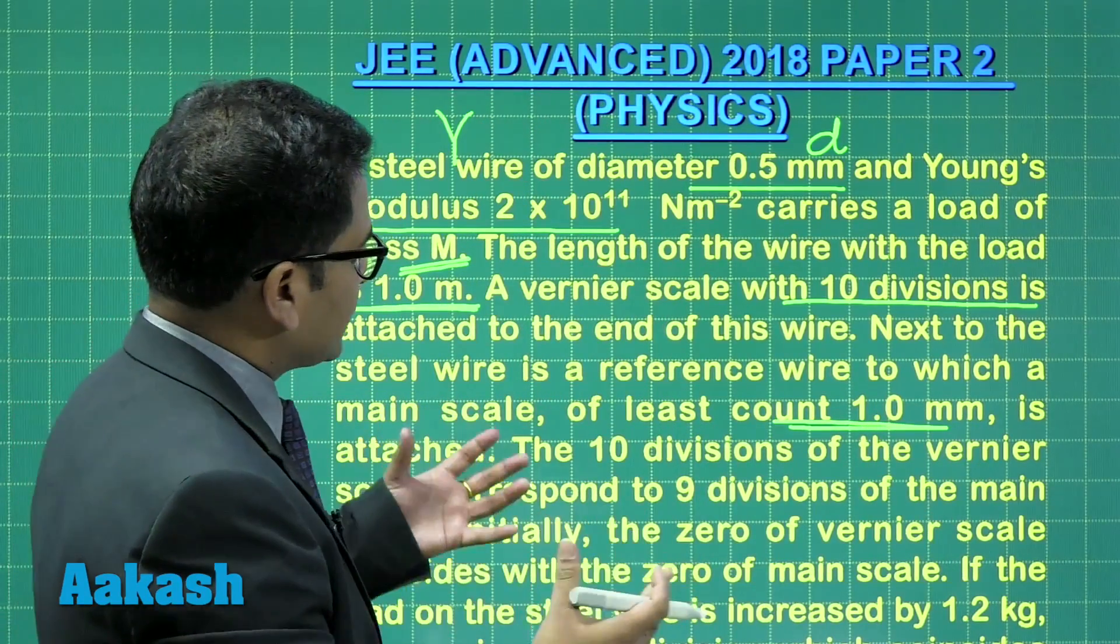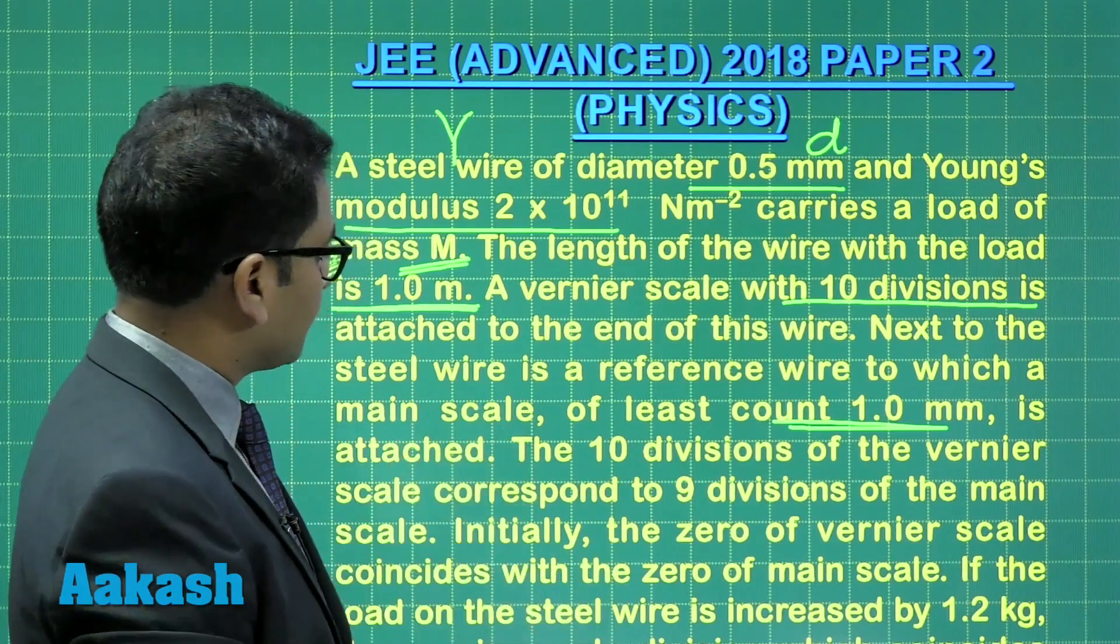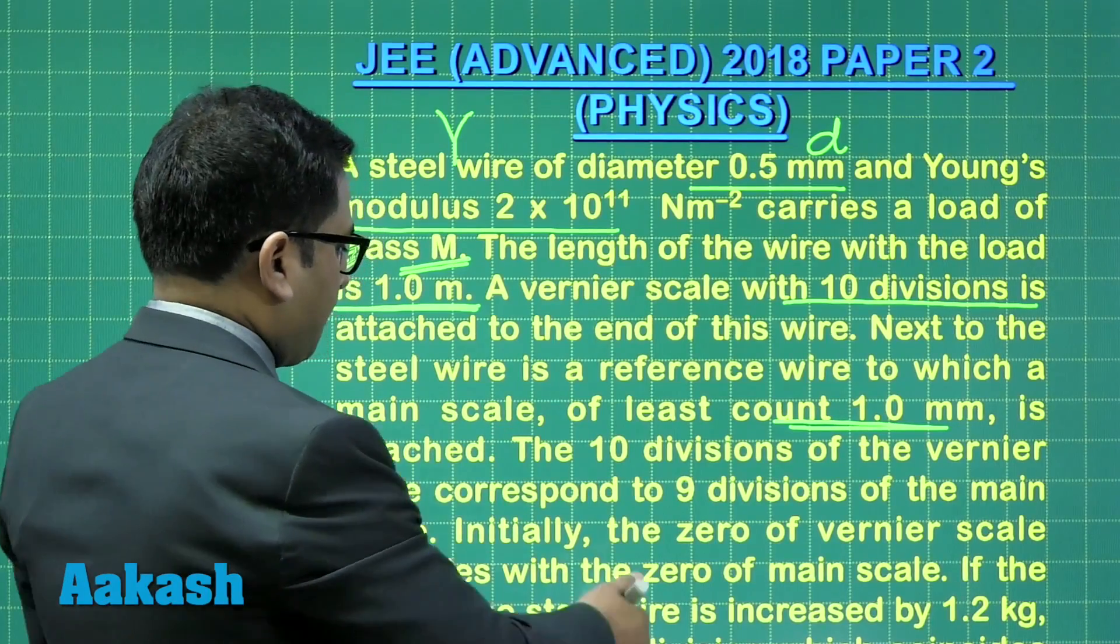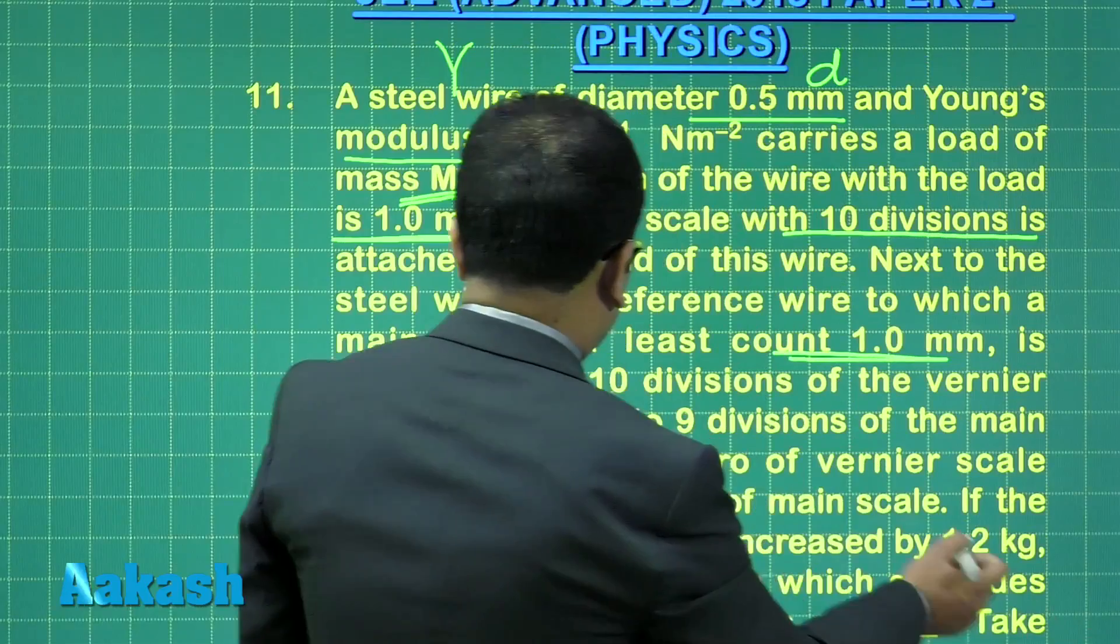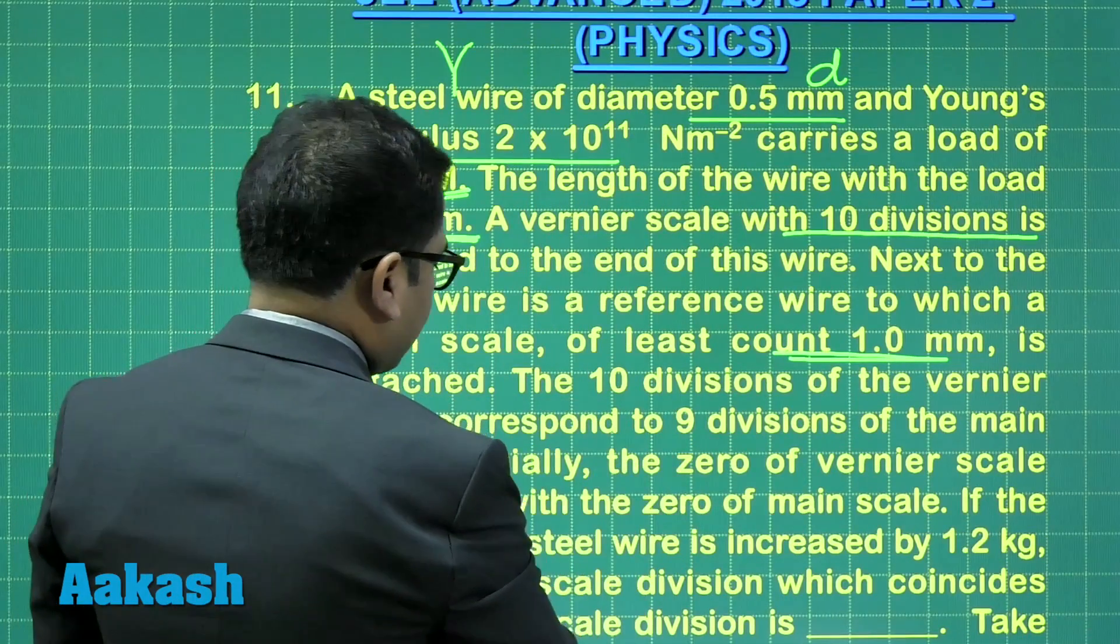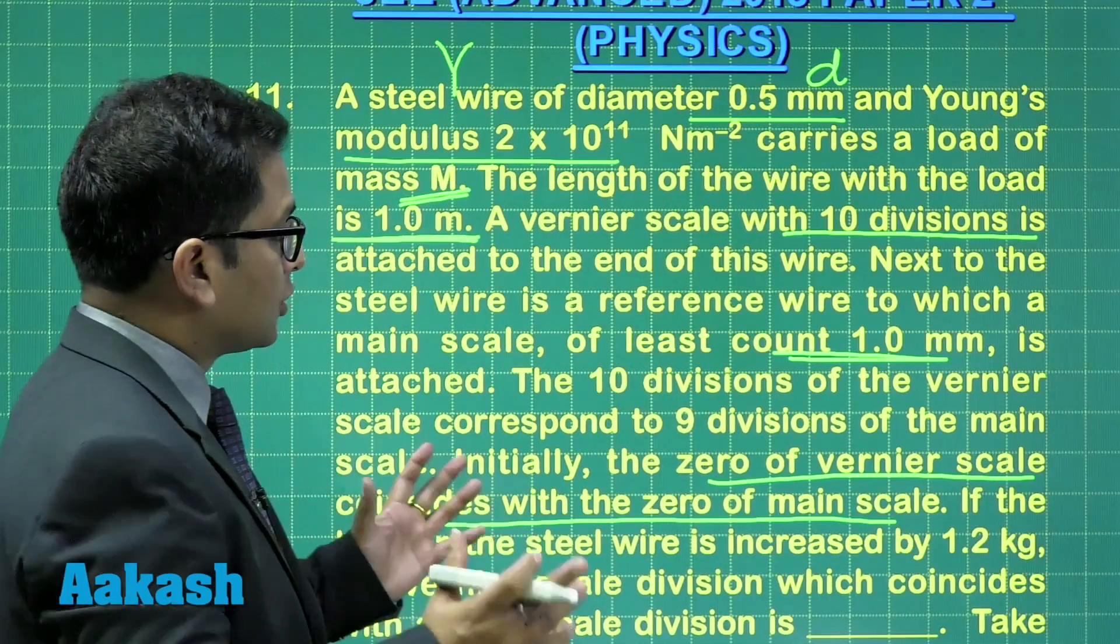So from this particular data, we can say least count is 0.1 millimeter, the least count of the Vernier caliper. And after that, the next statement says the 0 of the vernier coincides with the 0 of the main. In other words, there is no zero error.